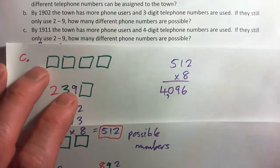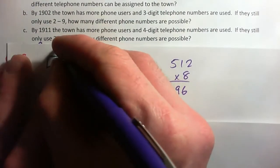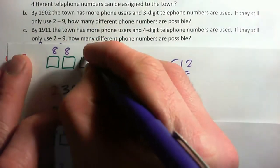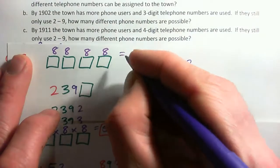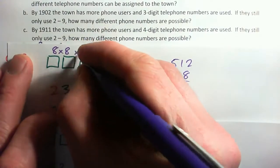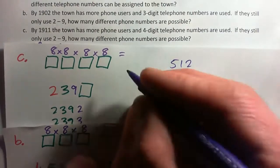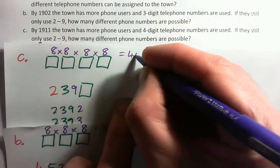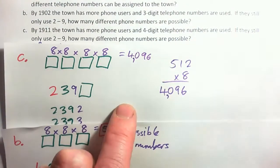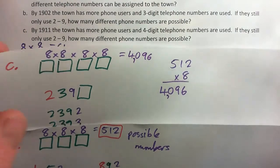So 4,096 new users by 1911. The other way — the formula way — is just to go 8 times 8 is 64, times 8 again is 512, times 8 again is 4,096. But I really hope we can think about and understand why, rather than memorizing what to do.